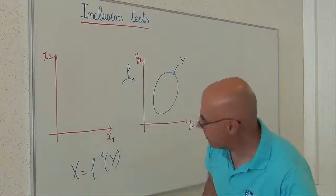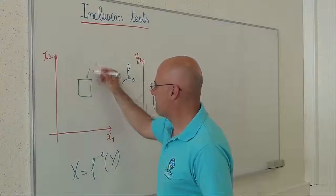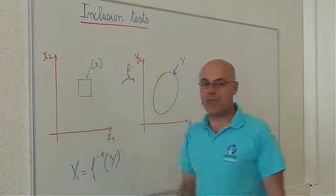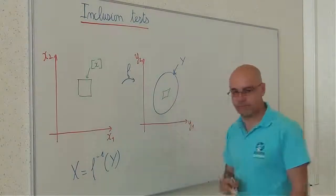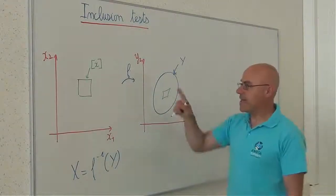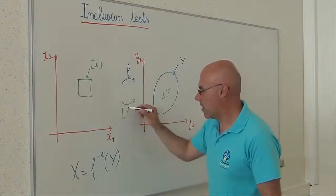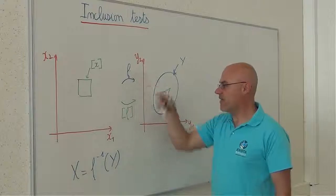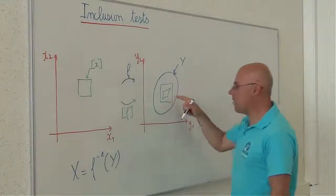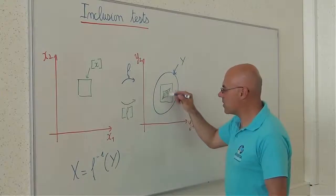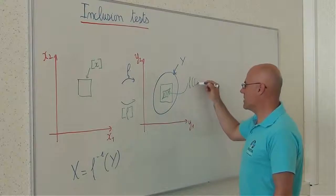If I take one box here, let's say X, the image of a box, recall, is not a box. But if I have an inclusion function of F, I will be able to compute a box which encloses this image. So here, it's F of X.